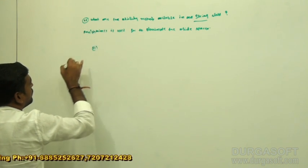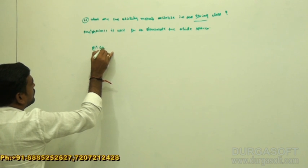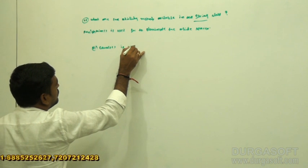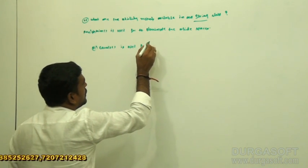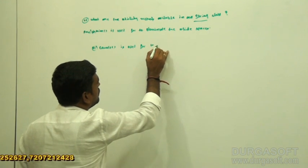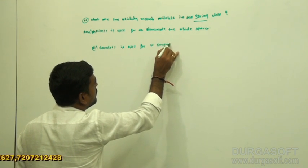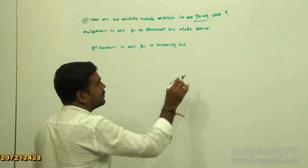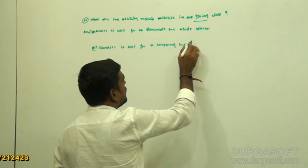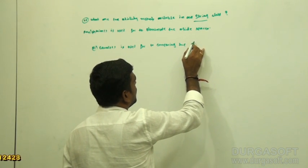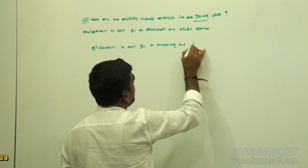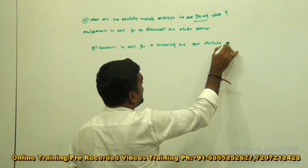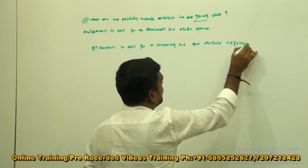Next, the equals method. Equals method is used for comparing two string class objects, or comparing the two object references.